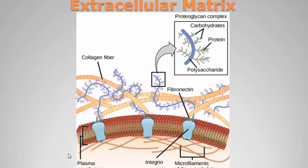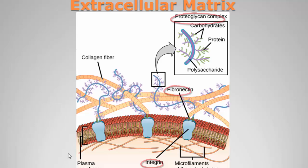Some of the extracellular matrix proteins include collagen, fibronectin, integrins, and proteoglycans — all present in the extracellular matrix. Matrix metalloproteinases help in the cleavage of these ECM proteins, making a way for a cell to move from one location to another. They help in migration.